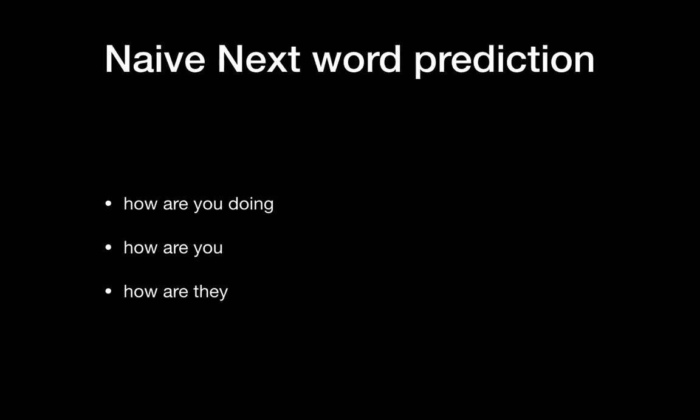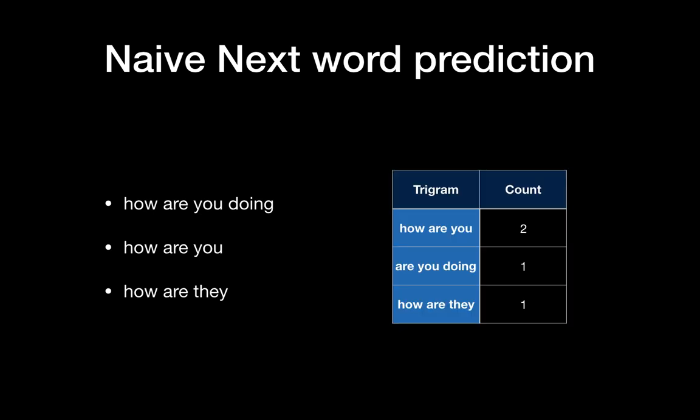And here's one example for next word prediction. Say we have three sentences here: 'how are you doing,' 'how are you,' and 'how are they.' So we have the trigrams here: we have two 'how are you,' one 'are you doing,' and one 'how are they.'